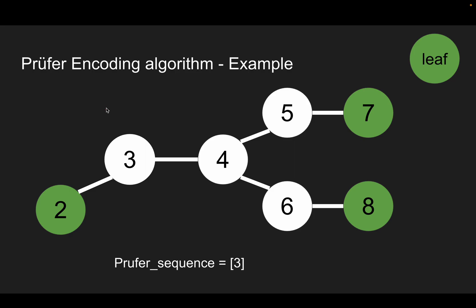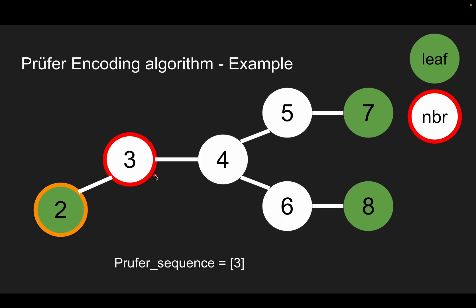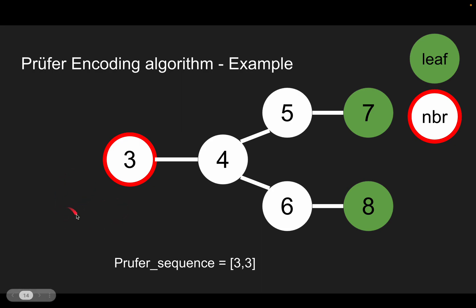Then we remove the leaf node. In the second iteration, we find the leaf node with the smallest label, which is 2. We find its neighbor and add its neighbor to the Prüfer sequence. Then we remove the leaf node.